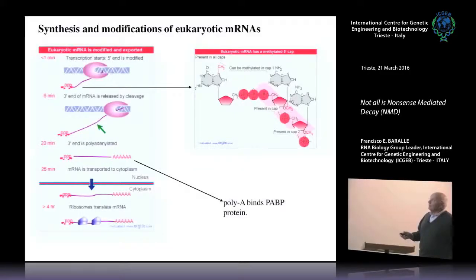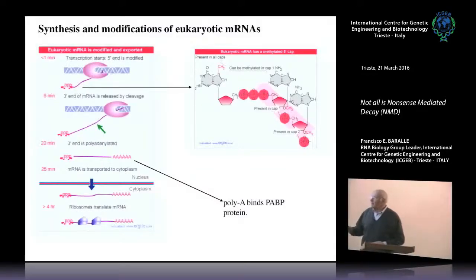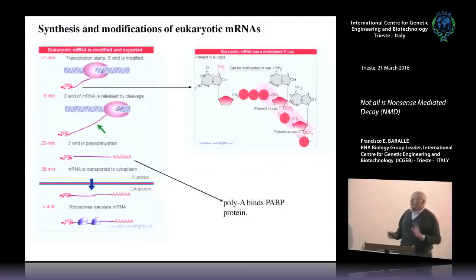Transcription progresses according to the length of the mRNA, and when it reaches the three-prime end, the RNA is cleaved, released, and unpolyadenylated. Once it's all completed — all the splicing, capping, polyadenylation — the mRNA is transported to the cytoplasm and translated. And that's another complicated issue that you have heard and will hear about in this course.